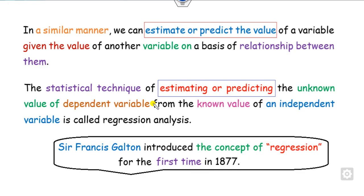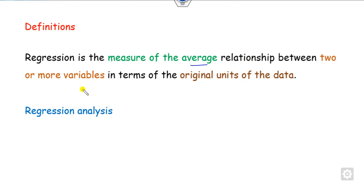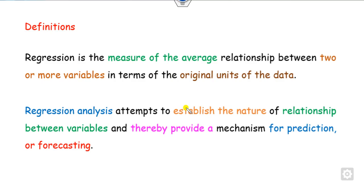What is the definition of regression and regression analysis? Regression is the measure of the average relationship between two or more variables in terms of the original unit. The analysis is used to establish the nature of the relationship between variables and provides a mechanism for predicting, estimating, or forecasting. Regression analysis is also widely used in time series and curve fitting.